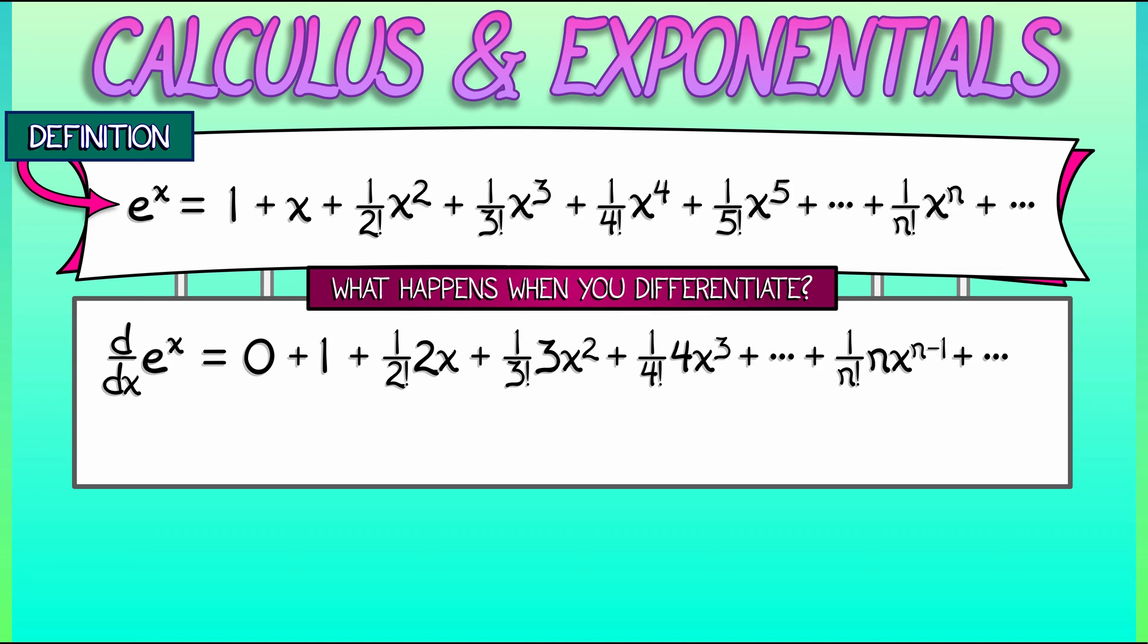Now, we can do a little bit of simplification here. I can get rid of that 0. My first term is 1. What is the next term? Well, 2x divided by 2 factorial is simply x. What is 3x squared divided by 3 factorial? Well, the 3s cancel, and I am left with a 1 over 2 factorial times x squared. Aha!